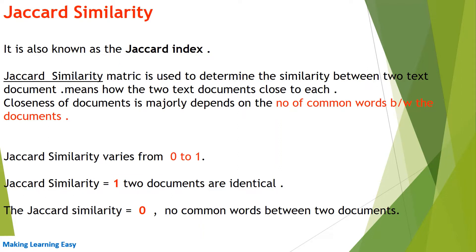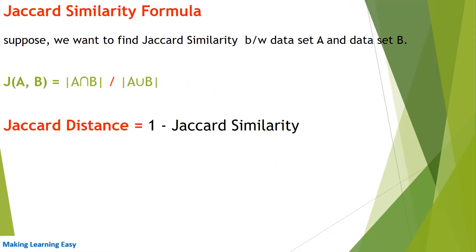Jaccard similarity varies from zero to one. If Jaccard similarity is one, it means the two documents are identical. If Jaccard similarity is zero, it means there are no common words between the two documents, so the two documents are not similar at all. The Jaccard similarity formula for two datasets A and B is: absolute value of A intersection B divided by absolute value of A union B. Jaccard distance equals one minus Jaccard similarity.